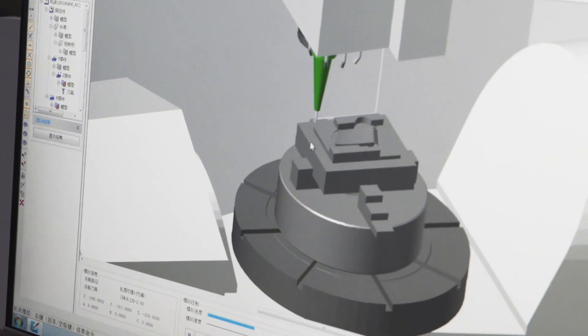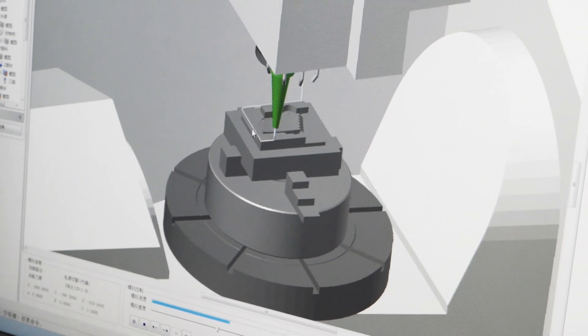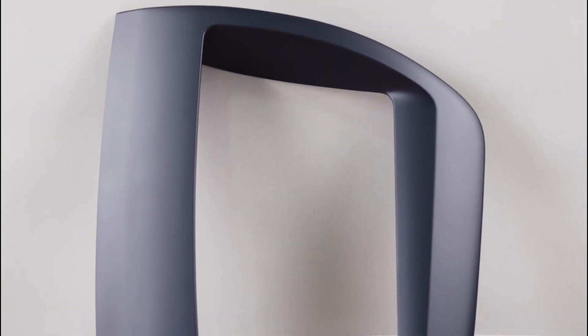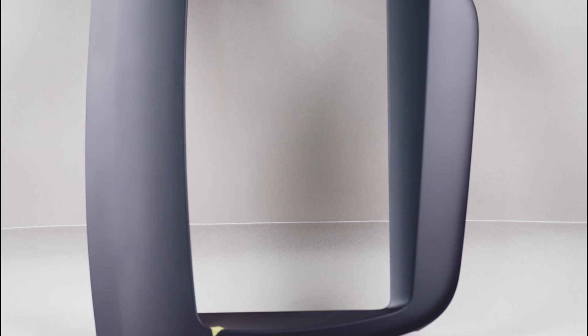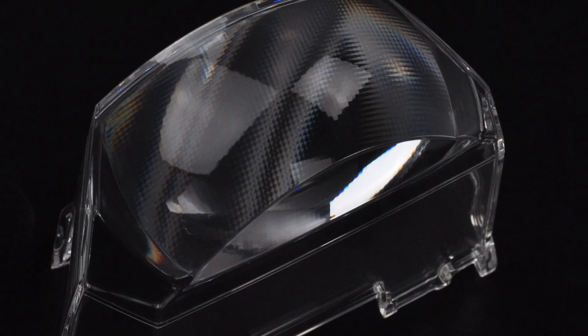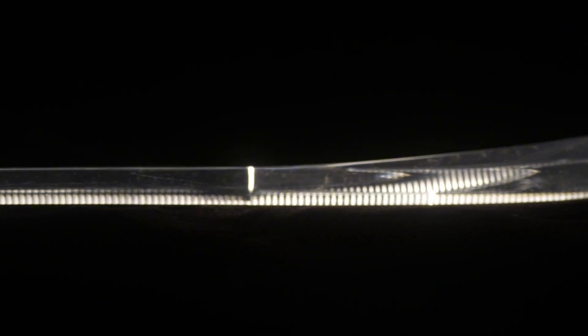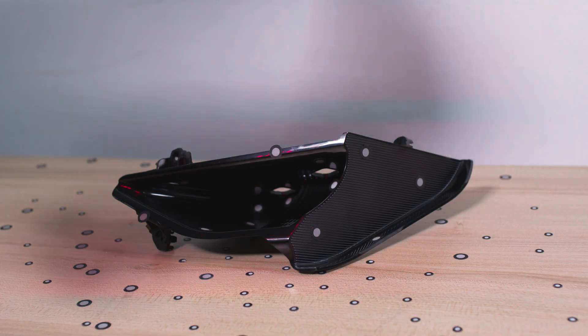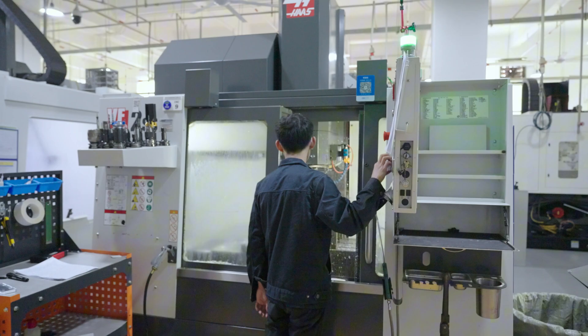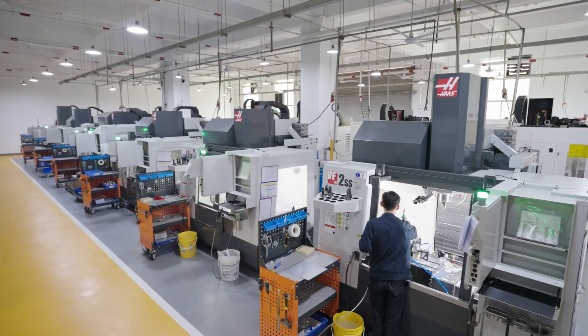CNC machining of plastics is a true reflection of Waken's commitment to excellence. With years of experience and top-notch skills, we make sure every detail is perfect. Waken's expertise in CNC machining of plastic parts provides your projects with precise, reliable, and stable solutions.